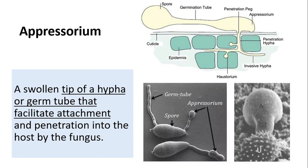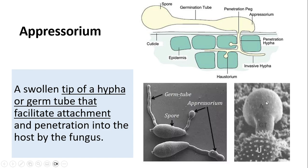The appressorium is the swollen tip of hyphae or a germ tube that facilitates the attachment and penetration of fungi into host cells. Here you can see real-time photographs of the appressorium, spore, and germ tube. This is the uredospore of wheat rust germinating into the appressorium — the germ tube and appressorium are involved in attachment and penetration of this fungus into wheat cells.